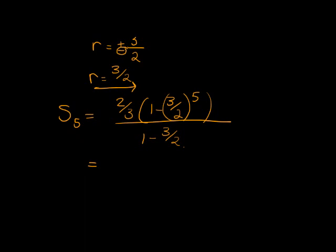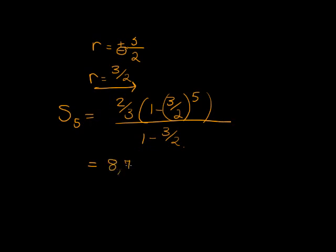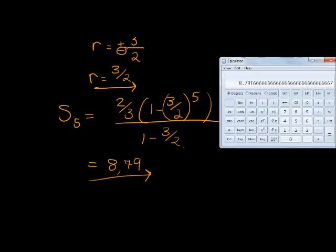And you punch that in your calculator, since they did tell us to give the answer as a decimal to two decimal places. Let's go and see what that is. Let's first do this, 1 minus, and in brackets, 3/2 to the power of 5. That gets multiplied with 2/3, and that gets divided by 1 minus 3/2. And the answer that I get to two decimal places is 8.79.